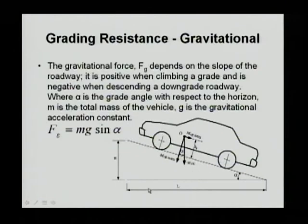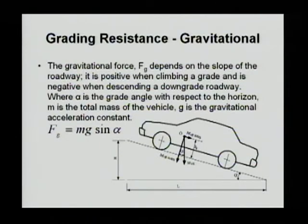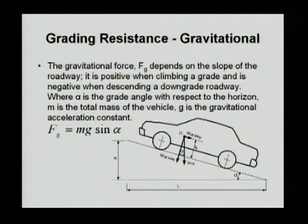Let's take a look at the details of each resistance. The gravitational resistance is the resistance on the vehicle itself. When the vehicle is on a slope, part of the vehicle weight becomes a resistance. If you are on a downslope, part of the vehicle weight actually becomes a traction force to move the vehicle.